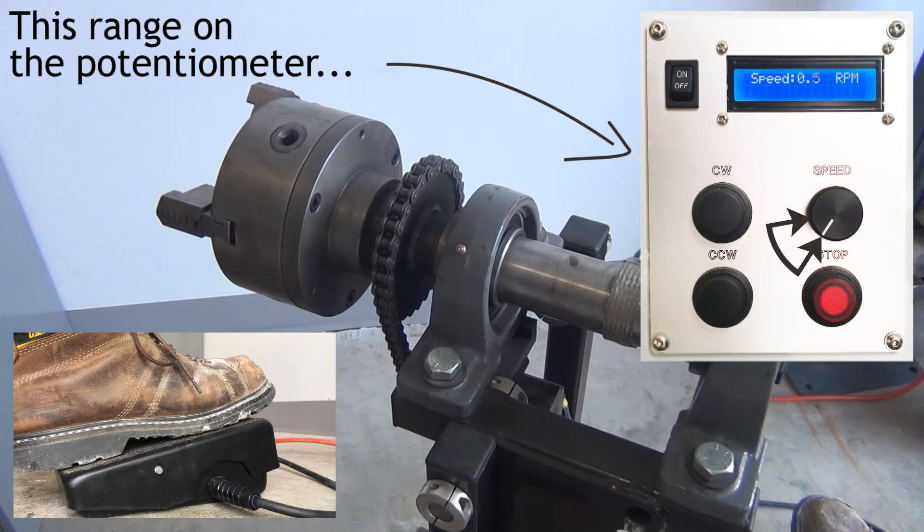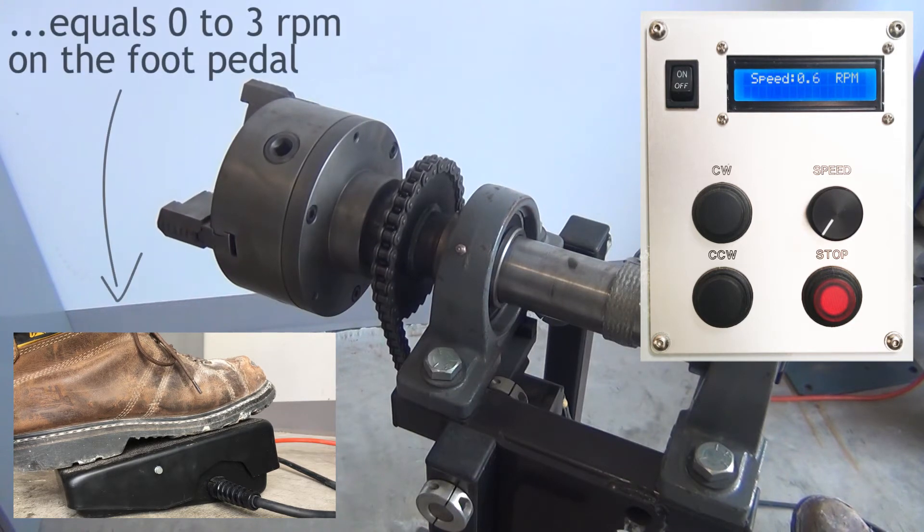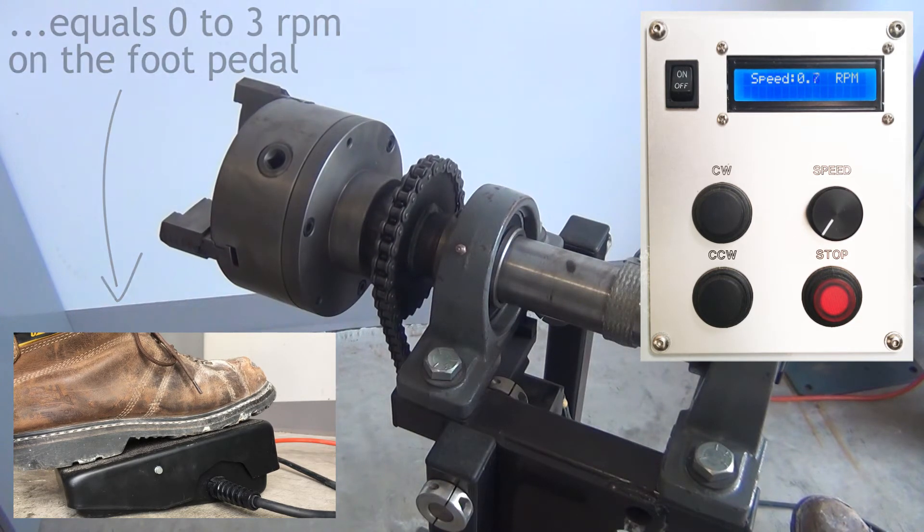I decided to make five different speed ranges that set the foot pedal to a 3 RPM range instead of the 10.